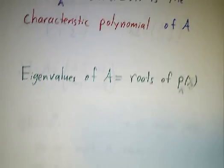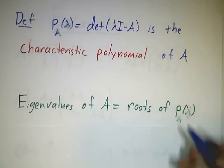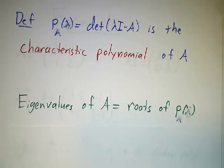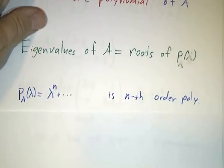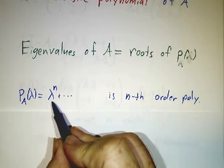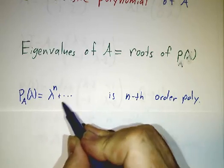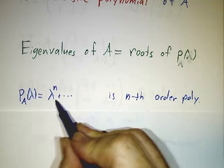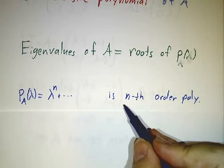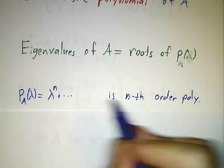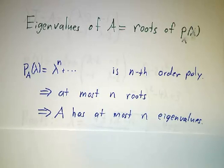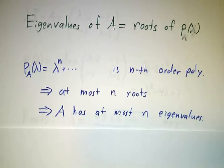And the eigenvalues of A are exactly those values of lambda that make the characteristic polynomial equal to 0. Now, the polynomial itself, when you compute this n by n determinant, you're always going to get n powers of lambda. So it's an nth order polynomial, and then you get other terms. It's not exactly lambda to the n, it's lambda to the n plus something lambda to the n minus 1, all the way down. It's an nth order polynomial. And you know that an nth order polynomial has at most n roots.